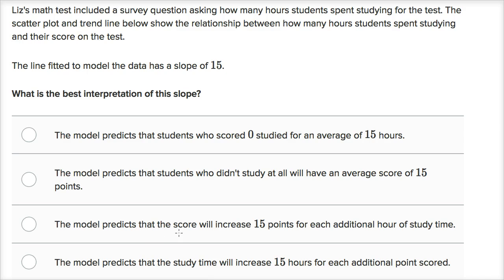The model predicts that the score will increase 15 points for each additional hour of study time. Yes, that is exactly what we were thinking about when we were looking at the model. That's what a slope of 15 tells you. You increase studying time by an hour, it increases score by 15 points.